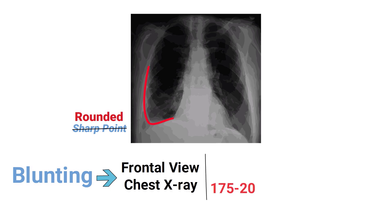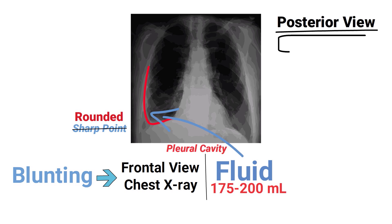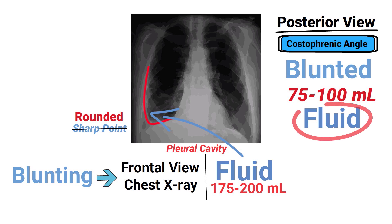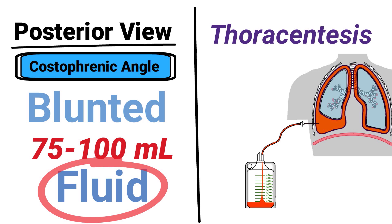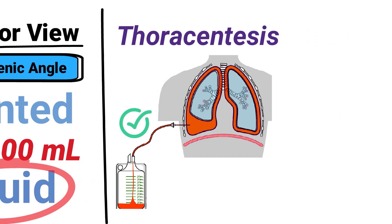Blunting on the frontal view of a chest x-ray will occur once 175 to 200 milliliters of fluid has accumulated in the pleural cavity. On a posterior view, the costophrenic angle may become blunted with only 75 to 100 milliliters of fluid. In such a case, a thoracentesis would be indicated, where a hollow needle is inserted to remove fluid from the pleural space.